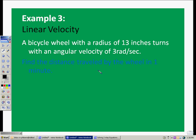For example, we are evaluating linear velocity to use that to find out how far something travels. A bicycle wheel with a radius of 13 inches turns with an angular velocity of 3 radians per second, and it wants us to find the distance traveled by the wheel in one minute.